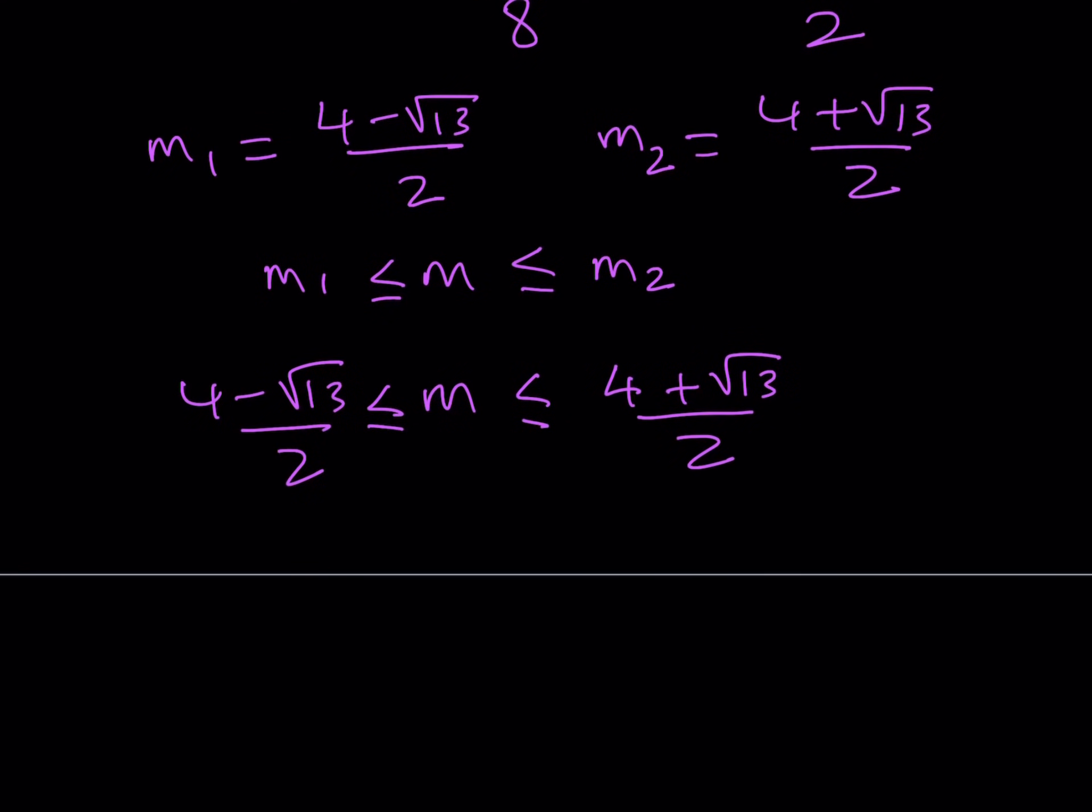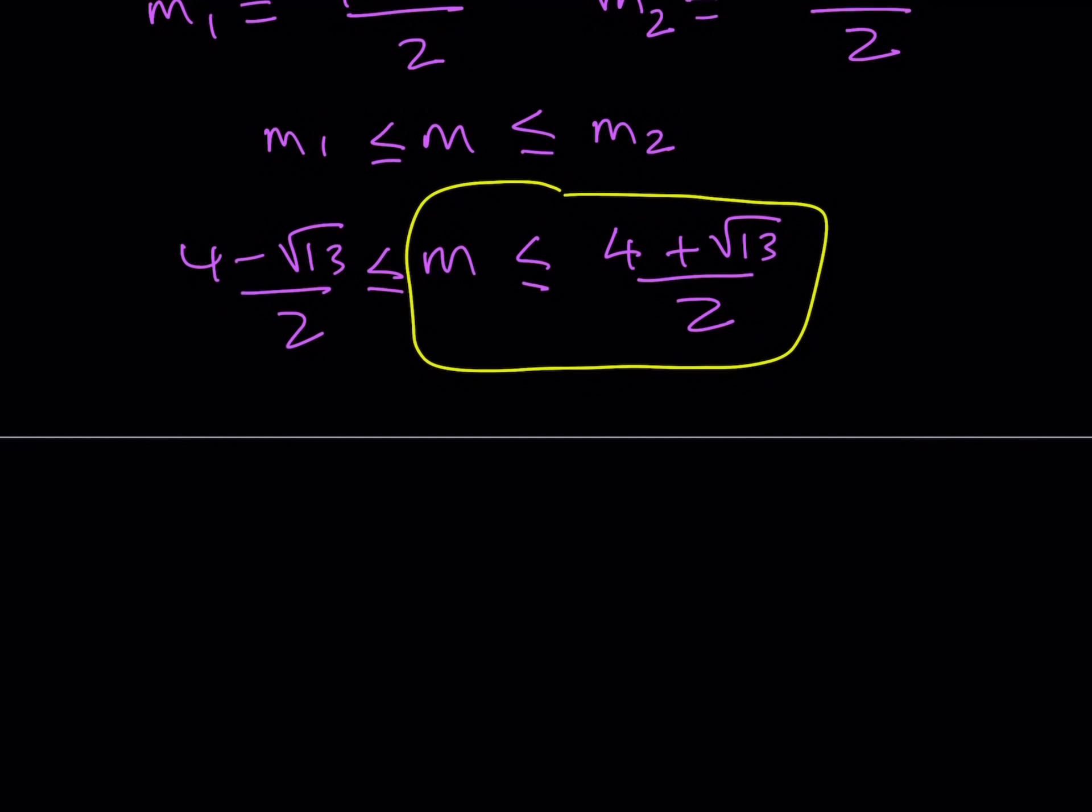Now, remember, we were looking for the maximum value of f(x), which was equivalent to the maximum value of m. And here we did find it actually, because we know that m is less than or equal to this value here. And this tells us the maximum value, because m cannot be greater than this value. So basically, maximum f(x), which is the same as maximum m, is going to equal 4 plus root 13 over 2.